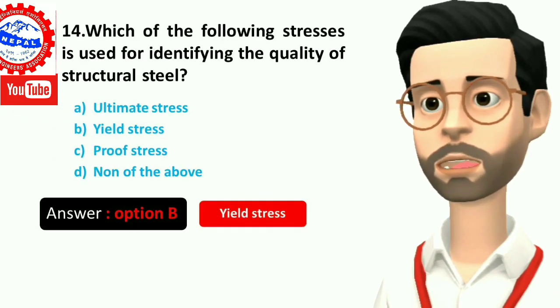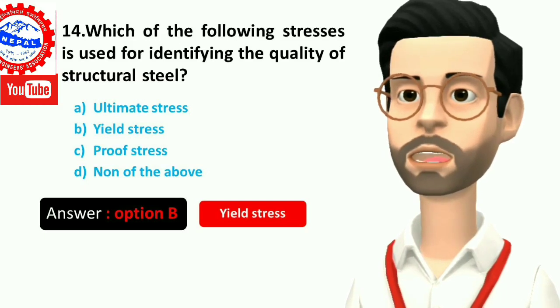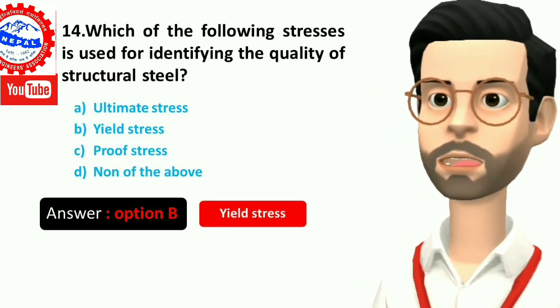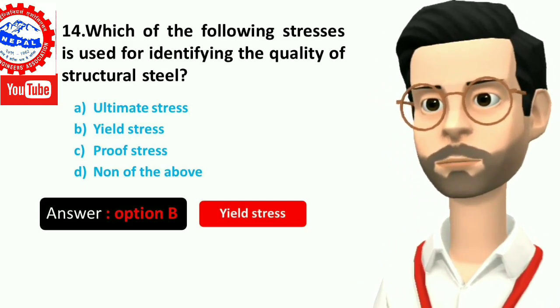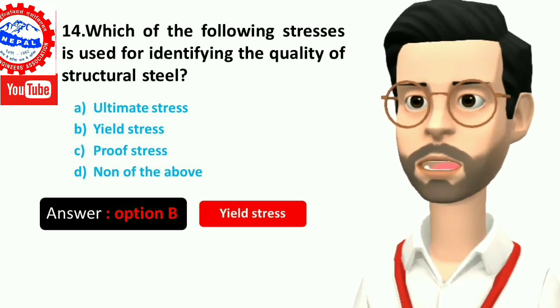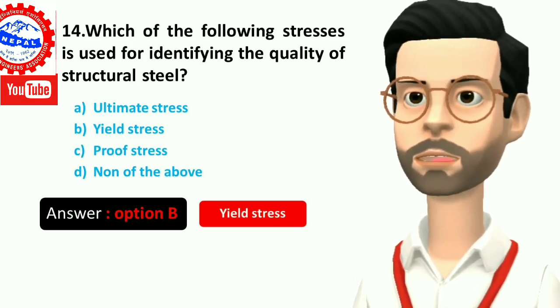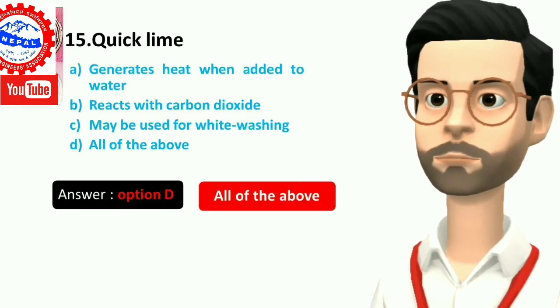Fourteen, which of the following stresses is used for identifying the quality of structural steel? A) ultimate stress, B) yield stress, C) proof stress, D) none of the above. Answer is option B, yield stress.